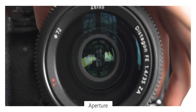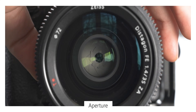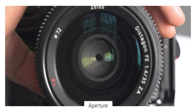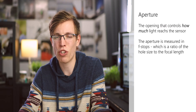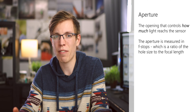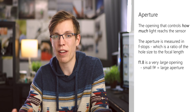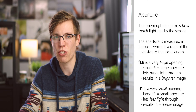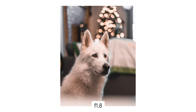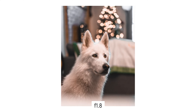Moving on to aperture: your aperture, or iris, is the hole inside your lens made up of tiny blades that can be made larger or smaller to let more or less light through to the sensor. It's measured in f-stops, which is a ratio. An f-stop of f/1.8 is a very large hole that lets a lot of light through, giving a brighter image, whereas f/11 is a much smaller hole resulting in a darker image.